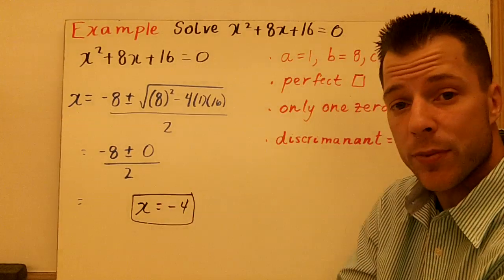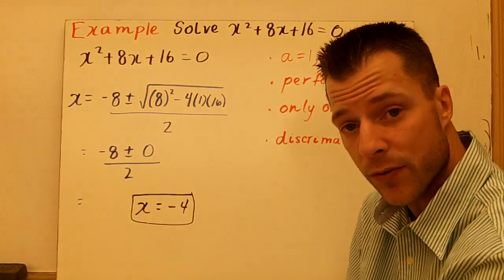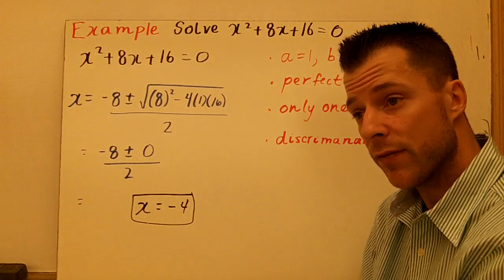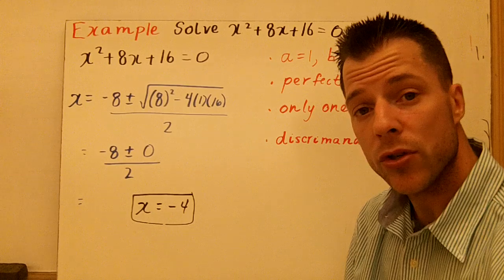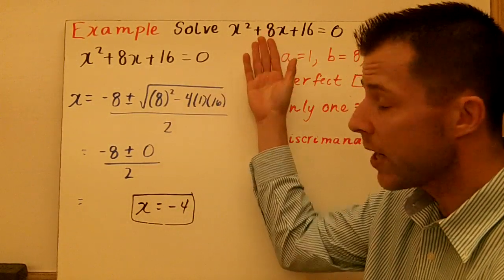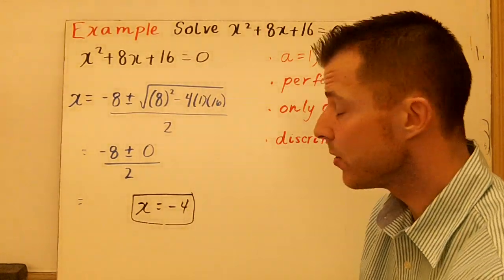If you factor this, you would have x plus 4 times the quantity x plus 4. You would say x equals negative 4 or x equals negative 4. You don't have to write the answer twice, it's just once. That vertex of that quadratic is going to be the only x-intercept.